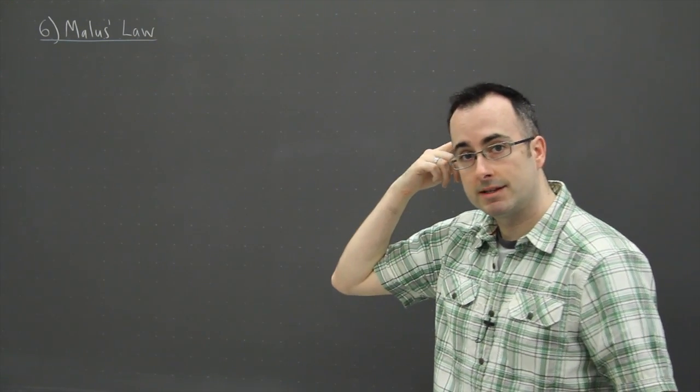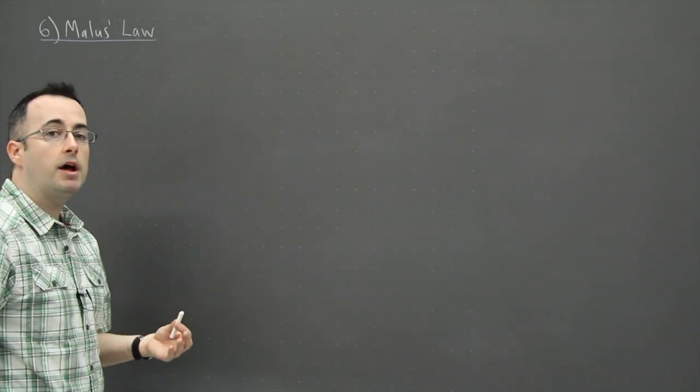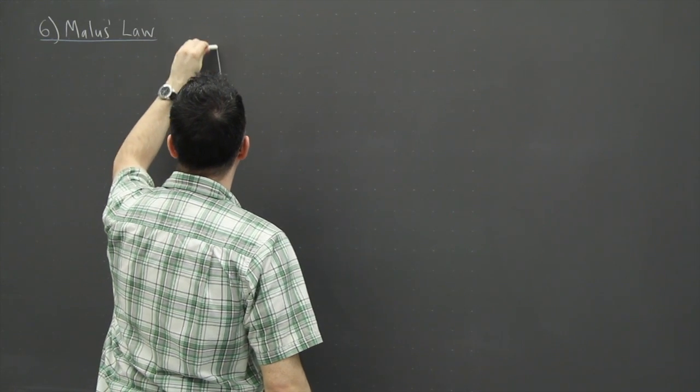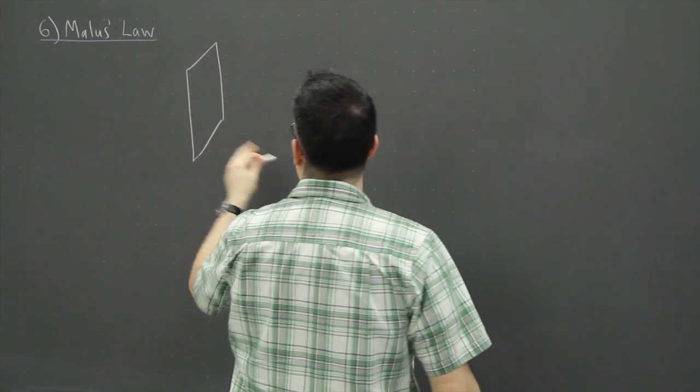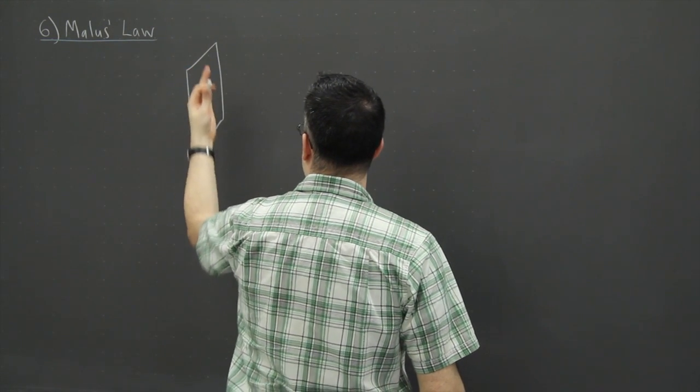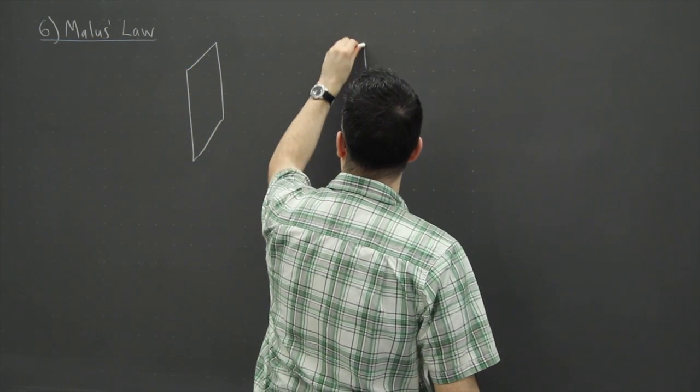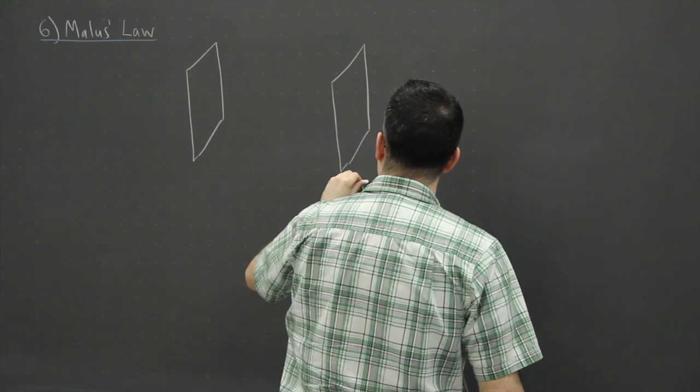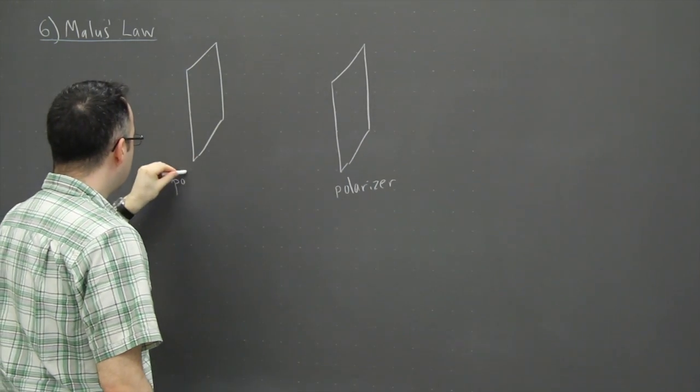Malus's Law I think is a neat one too. We're going to look at a situation where we have two polarizers this time. I'm going to try to draw in 3D even though it's hard to. So we're going to have one thing, like a piece of paper that's angled this way. I'm going to have another one over here. So this is going to be a polarizer, and this is another polarizer.